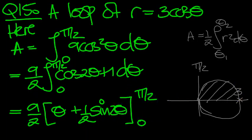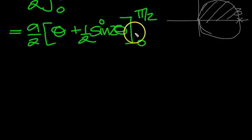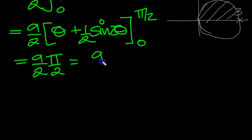The sine function will be 0 for both the input values here. So we're simply left with, and that's 0 there, so we're simply left with 9 over 2 times pi over 2, which is 9 pi over 4.